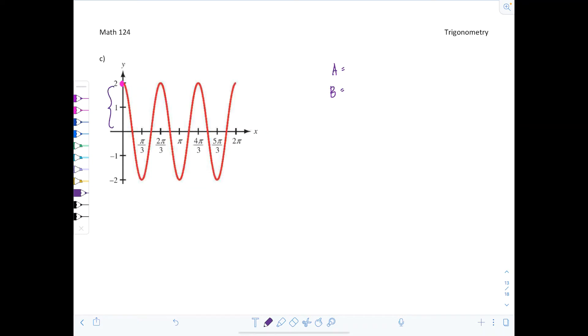So amplitude looks like it's 2, no reflection. So A is positive 2. And how do I figure out B? Well, let's see. From one peak or one max to the next is one complete cycle. That's one period. So I can see that the period is equal to 2 pi over 3.